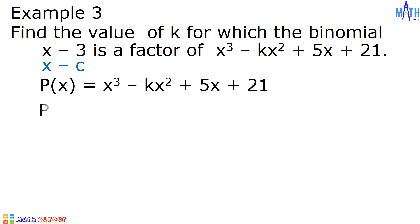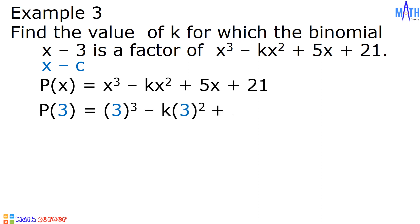Let us substitute 3 for x in this equation. p of 3 equals 3 cubed minus k times 3 squared plus 5 times 3 plus 21. Let us equate this to 0 since, according to the factor theorem, p of 3 is equal to 0.